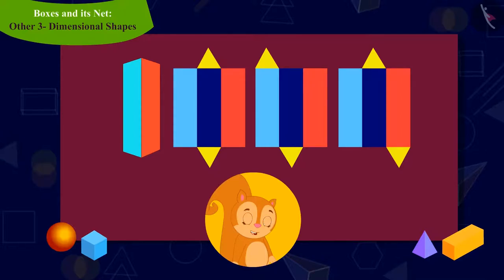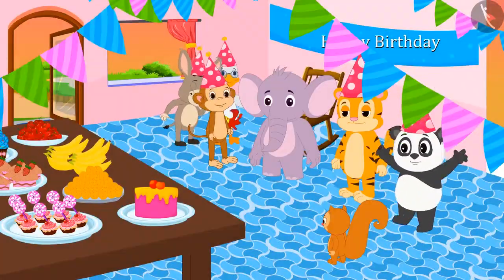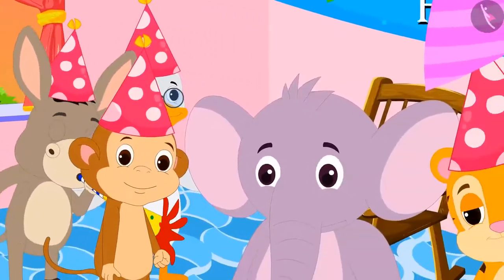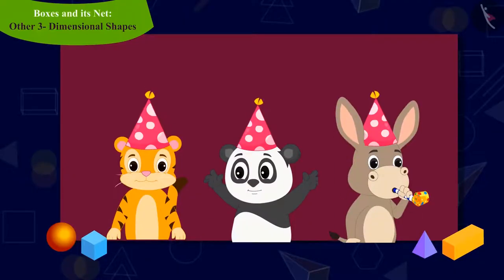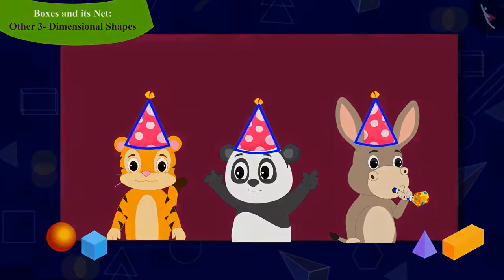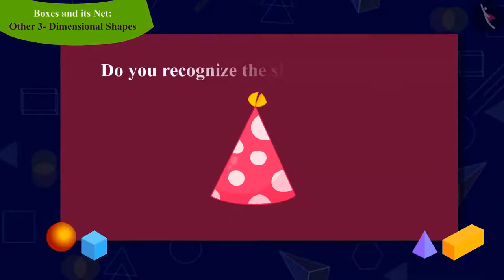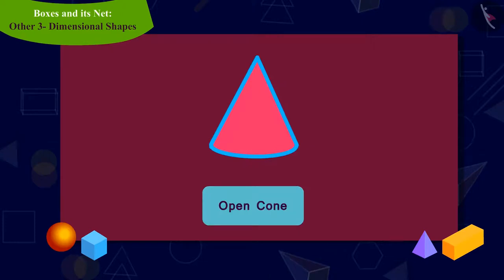Let's see what Chanda is doing now. Chanda now saw everyone in the party wearing a hat of this shape. She is wondering, what shape is this and what will the shape of its net look like? Do you recognize the shape of the cap? This is an open cone.